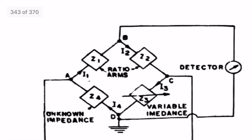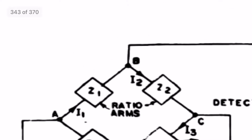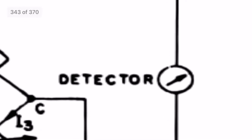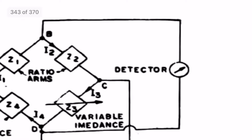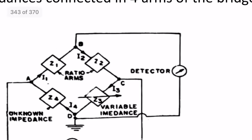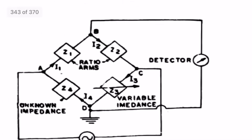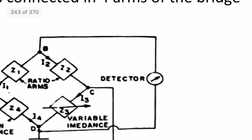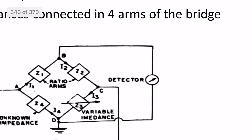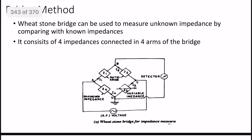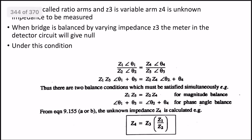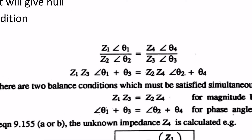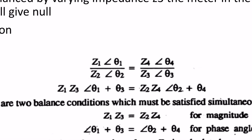The detector — a galvanometer — is connected. We can balance the bridge by changing the variable impedance until the detector deflection of the galvanometer reads zero. At that point, no current flows in between — the bridge is balanced. This is the balanced condition.